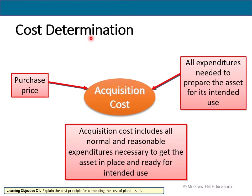When we think of acquisition costs, there's an analogy to inventory — remember, it was all costs to get inventory on-site and ready to sell. For assets, the acquisition cost is the purchase price plus all costs necessary to get the asset ready for its intended use. That includes setup, testing, installation, insurance, and shipping — all things necessary to get an asset in place and functioning.